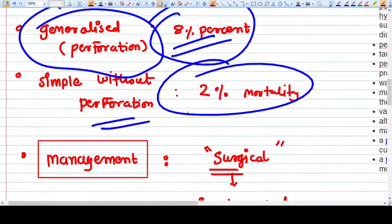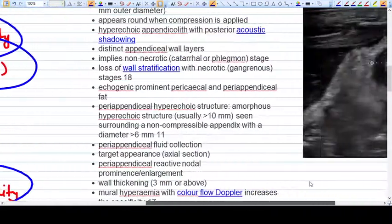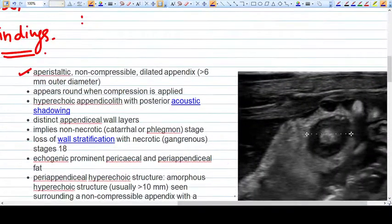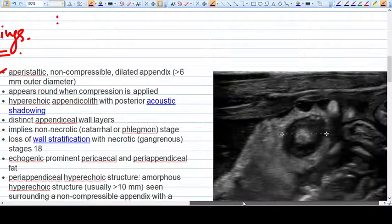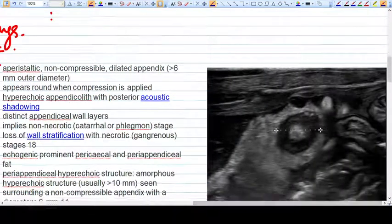This suggests that whenever you find it can be appendicitis, early involvement of surgeons and going for surgery is very important. These are some radiological findings of the appendix on ultrasound.